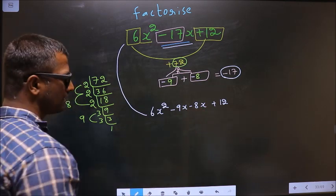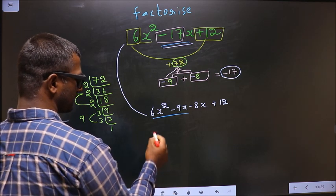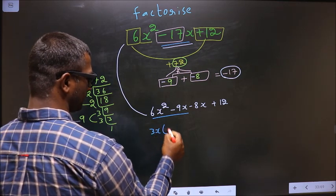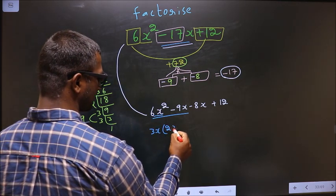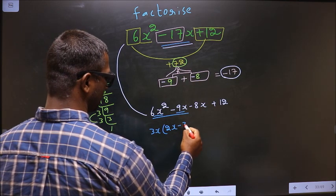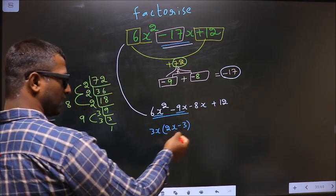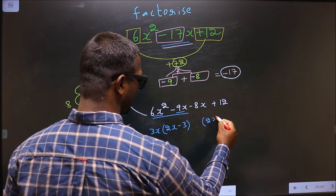Next, what can you take out common from these two terms is 3x. So here you get 2x and here you get -3. Whatever you have got here, here also you should get the same thing.